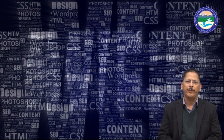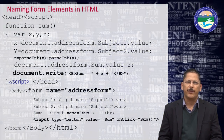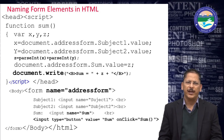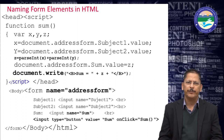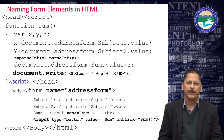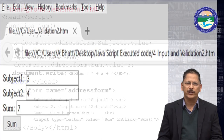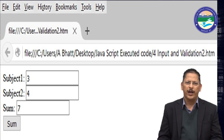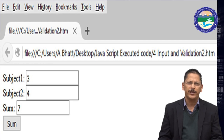Now let's look at a program where we are using JavaScript. Here it is basically an HTML program but we have used JavaScript as well. We have HTML, then head, then script, and inside the script we have a function called 'sum'. Inside the sum function we have three variables: x, y, and z. Looking at the output window: Subject 1 has input 3, Subject 2 has input 4, and the sum of Subject 1 and Subject 2 is 7 (3 plus 4 equals 7). The sum field is both a text box and a button.